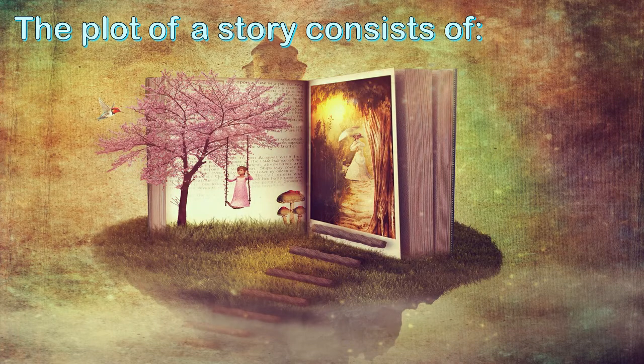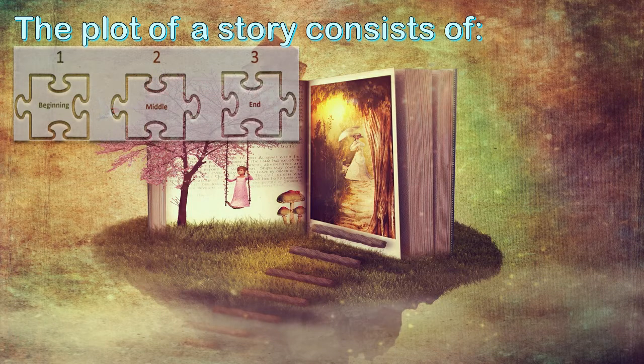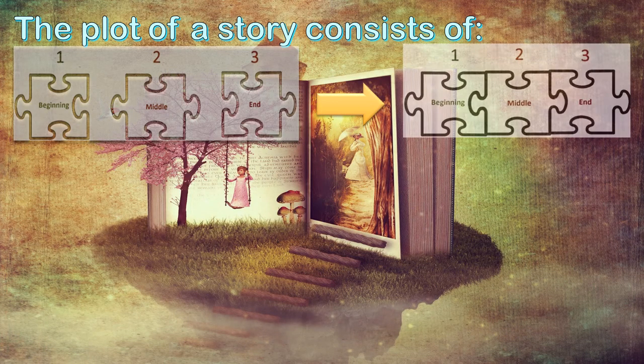Let's have a look at what the plot of your story is all about. A plot consists of the beginning, the middle, and the end of your story, and those three parts have to flow and fit together like puzzle pieces. The beginning introduces everything. The middle is the biggest bulk of your story — the build-up, the problem, and the resolution of the problem. And then your story has to end in an appropriate way.